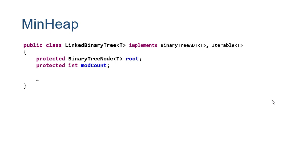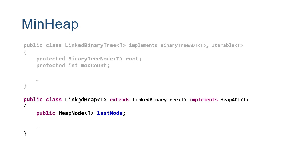Our MinHeap class extends the BinaryTree class, giving us all binary tree methods plus references to the root and mod count. The mod count tracks how many changes were made to the heap for iterators. Our actual heap class — called LinkedHeap because we use linked nodes — extends BinaryTree and implements the heap interface to pull in those new methods. It adds a reference to the last node that was added to the heap. We use last node for two things: when we remove the minimum we remove that last node, and knowing the last node added lets us determine where to add the next node.